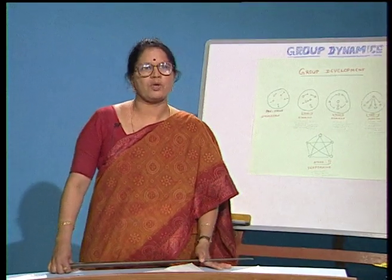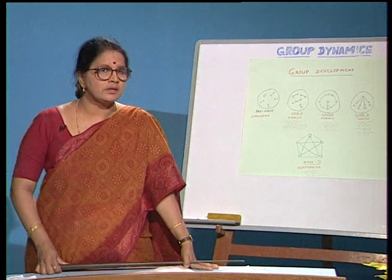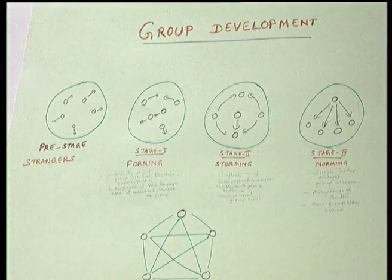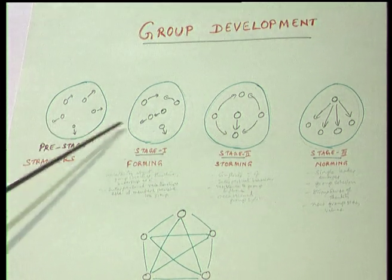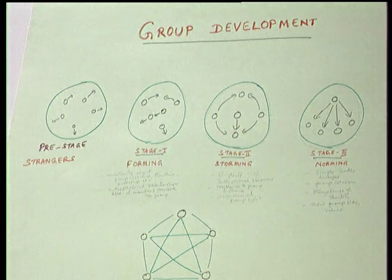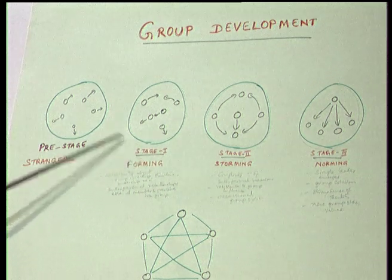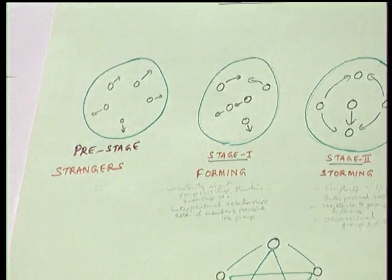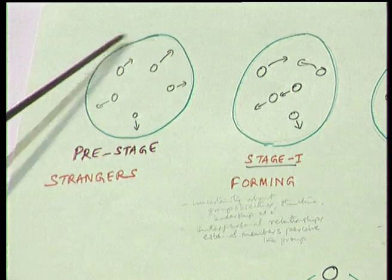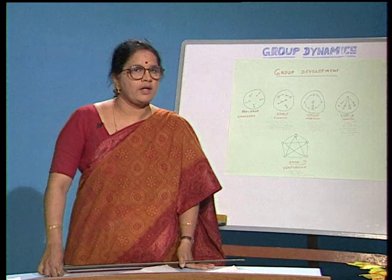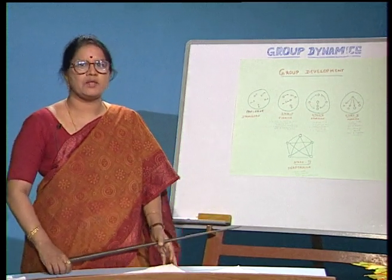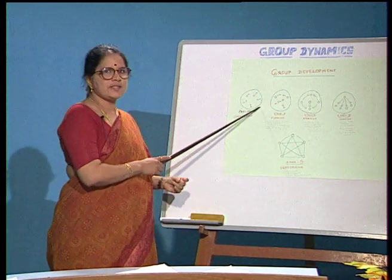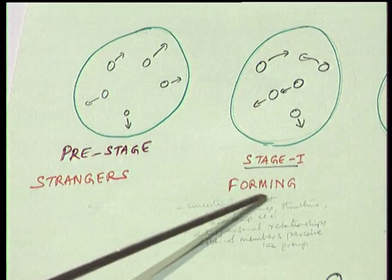We have discussed what a group is, the different types of groups, and the theories of group formation. Now let us understand the processes through which groups are formed. There are basically four stages. Prior to the first stage, there is a pre-stage where members are strangers — they do not know each other; they are at one place and are just beginning to establish communication. Think of a regular classroom on the first day of college admission when students enter and do not yet know each other.